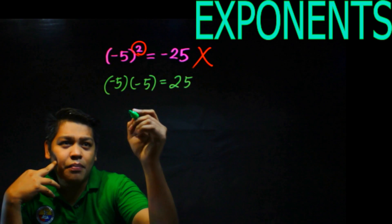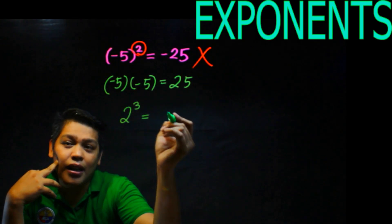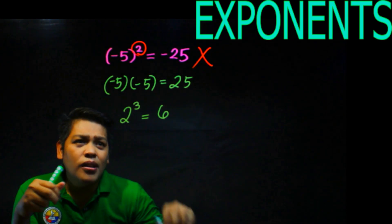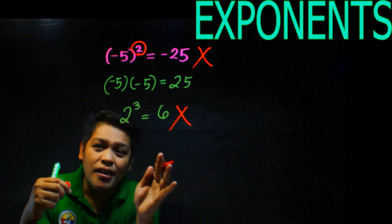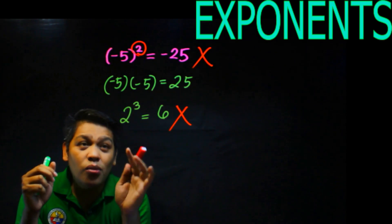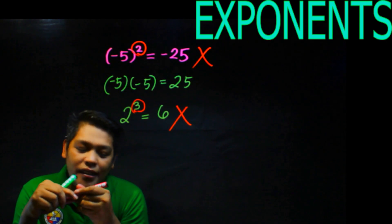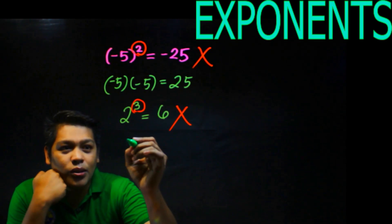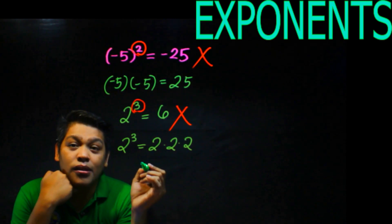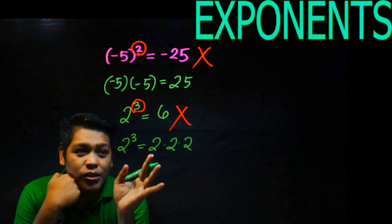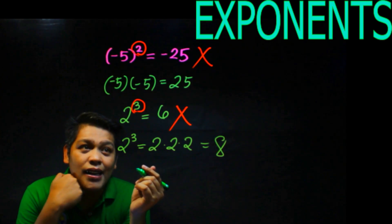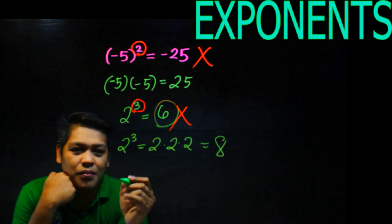Sometimes when there's 2 cubed, what they do is answer 6, which is wrong. They just multiply 2 times 3. The concept of powers or exponents is that you multiply the number by itself according to how many times the exponent says. So 2 to the third power is 2 times 2 times 2. That is 2 times 2 is 4, times 2, which equals 8 — not 6.